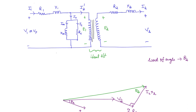From E2, how will you get E1? E2 and E1 are going to be in phase. The relation is E1 by E2 equals N1 by N2, where N1 is the number of turns of the primary and N2 is the number of turns of the secondary. So these are going to be in phase. We will assume it is a step-down transformer, meaning E1 is going to be greater than E2. So E1 you can simply draw in the same direction with a slightly larger magnitude.